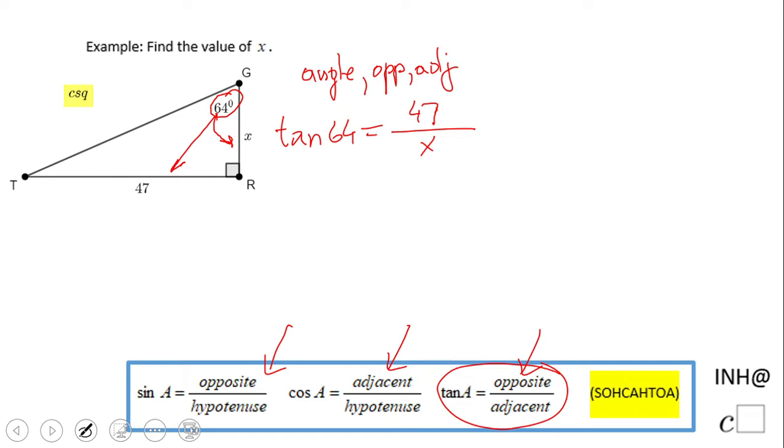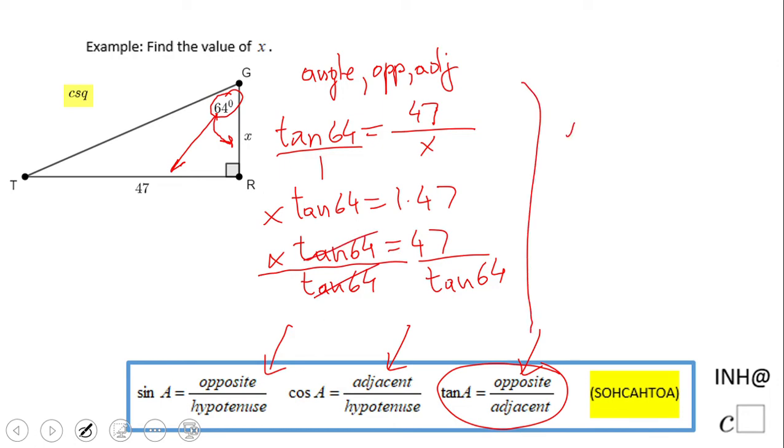So we need to solve for x here. I will cross multiply. It will look like I put a 1 down under the tangent, and we have x times tangent of 64 equals 1 times 47. x times tangent of 64 equals 47. And again, we need to solve for x. So we're going to divide by tangent of 64. So the answer for this problem is x equals 47 over tangent of 64.